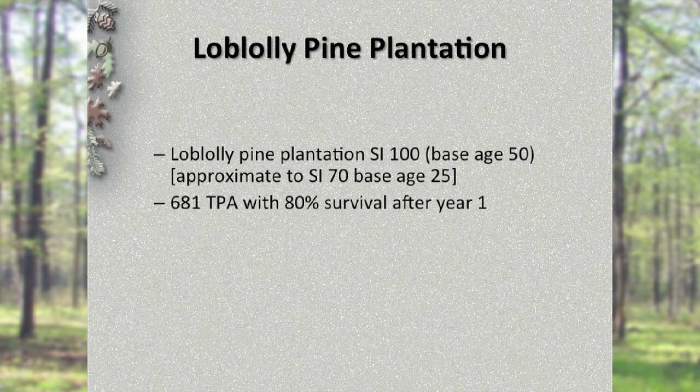Site index, or SI, is largely determined by soil properties. In this example, we are looking at a pine plantation with a site index of 100, base age 50, which means this site is capable of producing dominant trees that are 100 feet tall in 50 years. This equates to a site index of 70, base age 25, meaning the best trees would be 70 feet high in 25 years. Some reported site indices are in base age 50 and others in base age 25, so it's important to recognize that distinction.